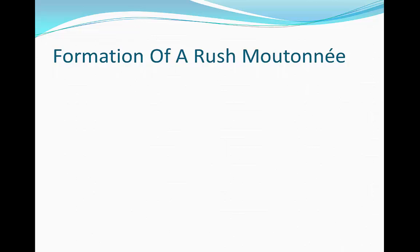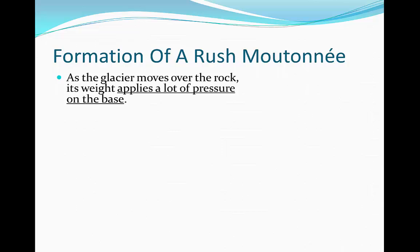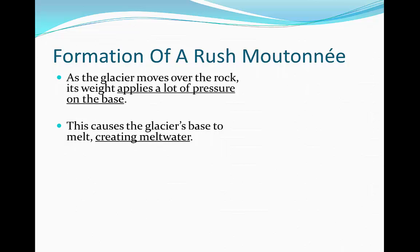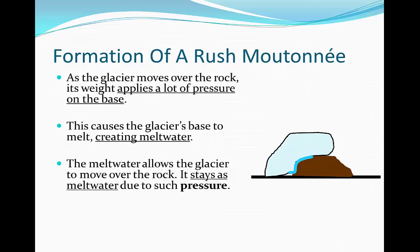As the glacier moves over the rock, its weight applies a lot of pressure on the base because it's moving uphill. This causes the glacier's base to melt, creating meltwater. The meltwater lubricates the glacier, allowing it to move up and over the roche moutonnée. The uphill part of the rock is now getting smoothed.